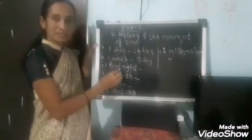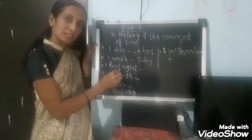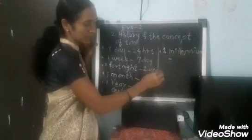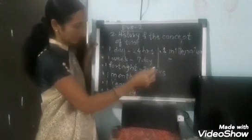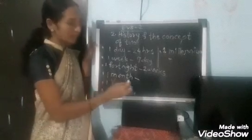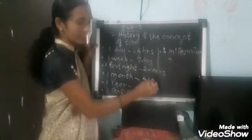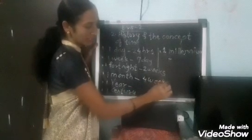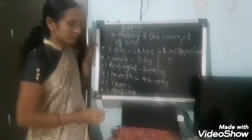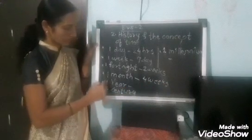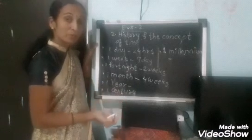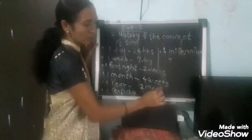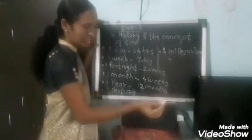A fortnight is two weeks. One month means four weeks, or we can say 30 or 31 days. One year means how many months? Yes, 12 months — and you know the names of months as well.